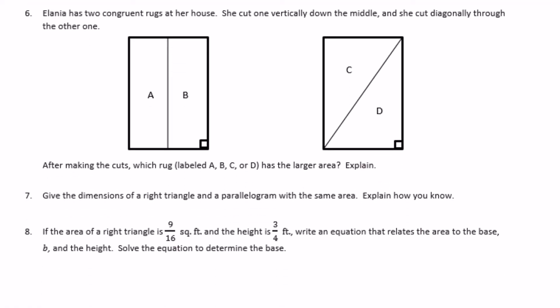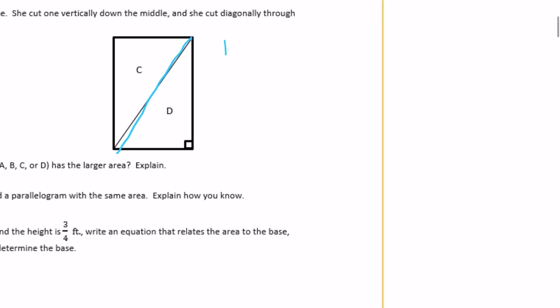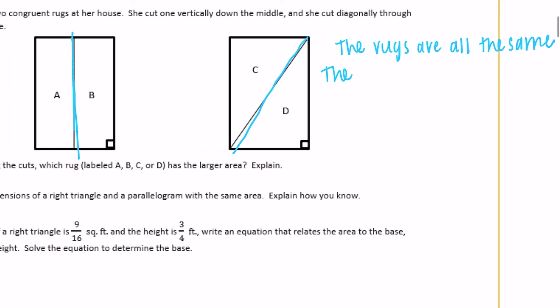Number 6: Elena has two congruent rugs. She cut one vertically down the middle and cut the other one diagonally. After making the cuts, which rug — A, B, C, or D — has the larger area? Since both rugs started out the same size, and we cut one down the middle and one diagonally, they are all actually the same size. The vertical line goes down the center making two congruent parts, and the diagonal line also makes two congruent parts because it splits the rectangle into two right triangles with exactly half the area.